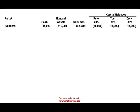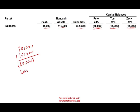Let's take a look at the beginning balances. We have cash of $15,000, non-cash assets of $110,000, $42,000 in liabilities, $55,000 credit balance for Pete, $14,000 credit balance for Tom, and $14,000 for Zach. The first thing they did is sell their non-cash assets for $30,000. They had a cost of $110,000, therefore the partnership will have a loss of $80,000.